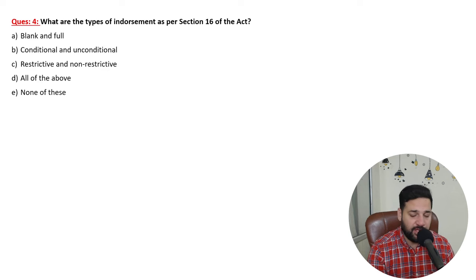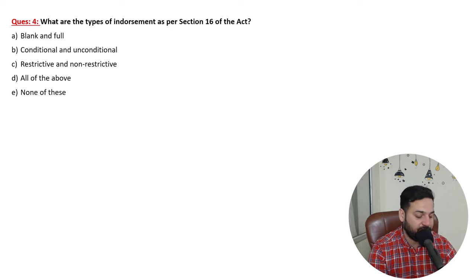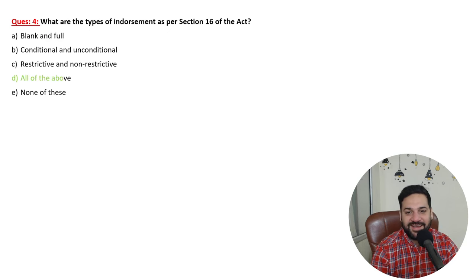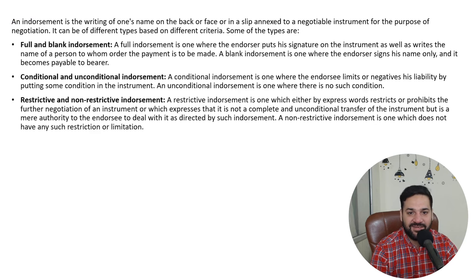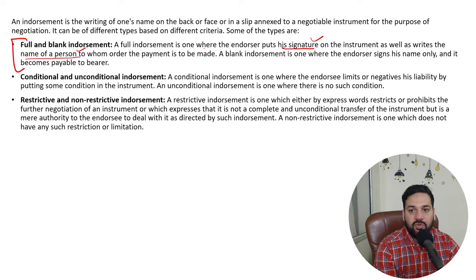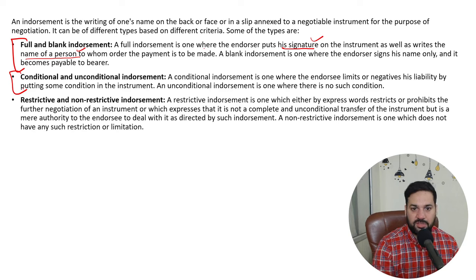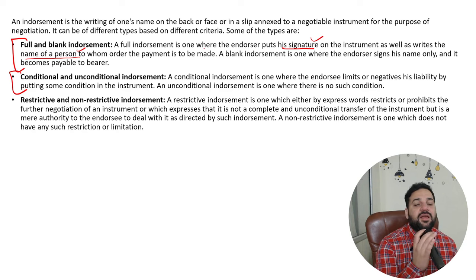What are the types of endorsements as per the Negotiable Instruments Act? There is blank endorsement and full endorsement. In a full endorsement, the endorser puts his signature as well as writes the name of the person to whom the order is to be made. In a blank endorsement, the endorser just puts his own signature.